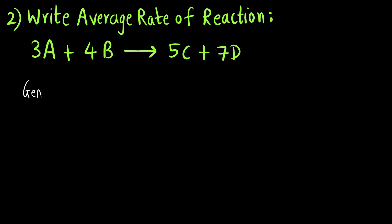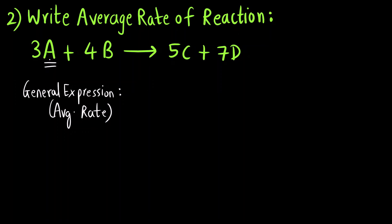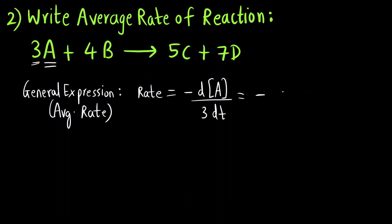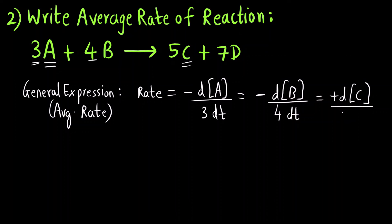Now let us write down the general expression for the average rate of the reaction for a given equation. The rate is equal to: minus change in concentration of reactant B divided by its stoichiometric coefficient into dt, which equals plus change in concentration of product C divided by its stoichiometric coefficient 5 into dt, which also equals plus change in concentration of D over 7 dt.